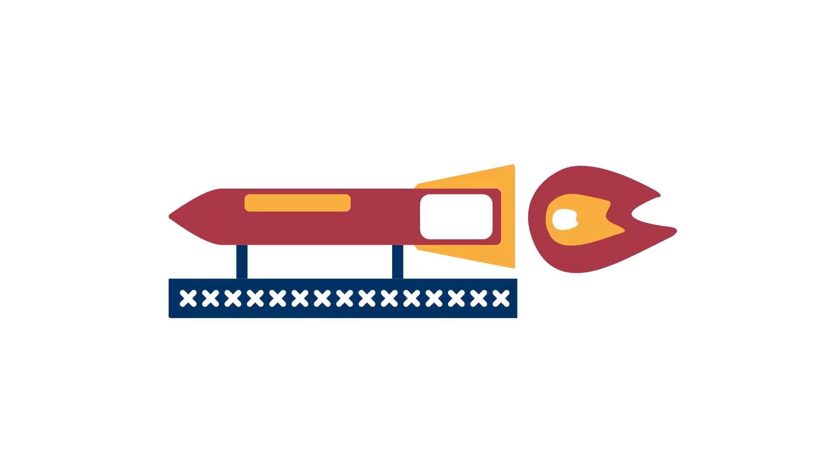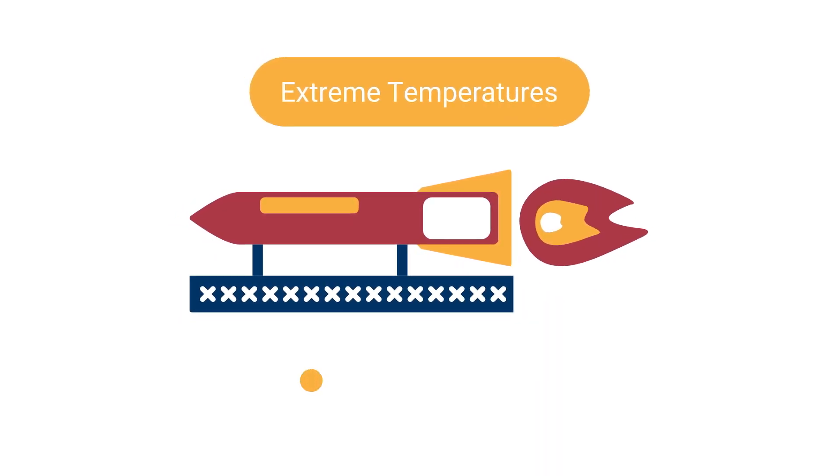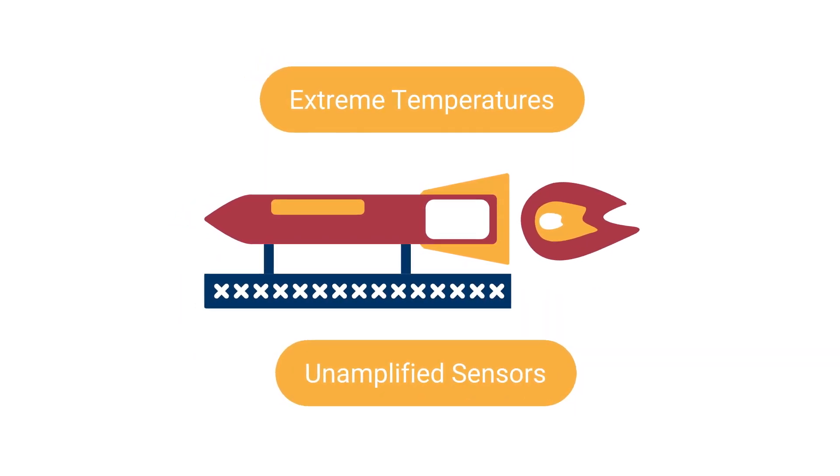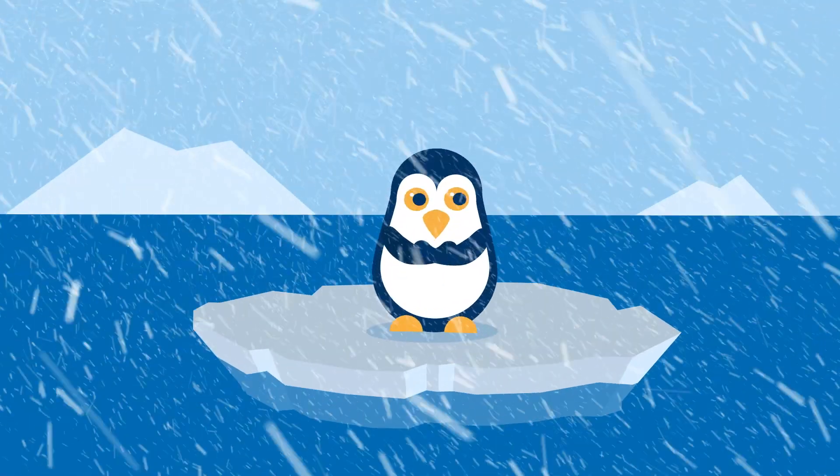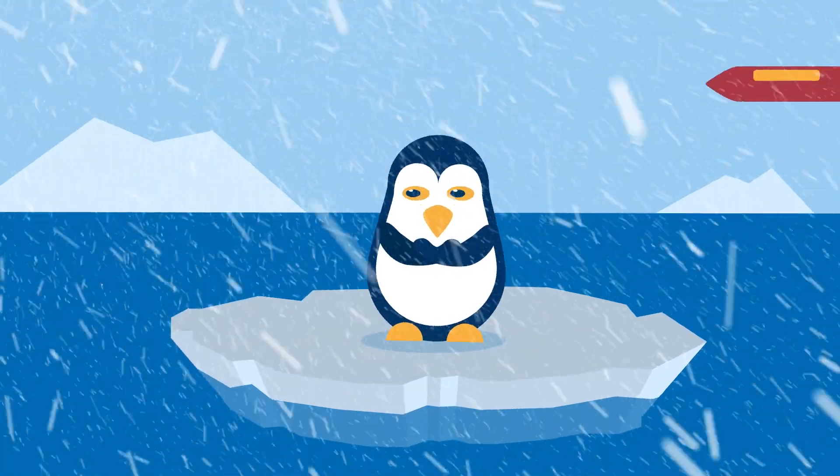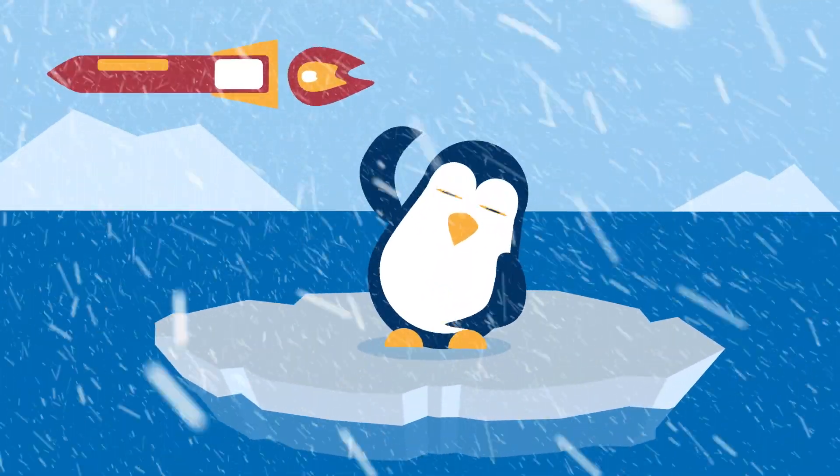Since you can find pressure sensors in a variety of contexts, people have developed different versions of sensors. In extreme temperatures, people use unamplified sensors. These send a fast response with a low voltage signal. Because the unit does not have ICs, it can remain operable in temperature extremes.